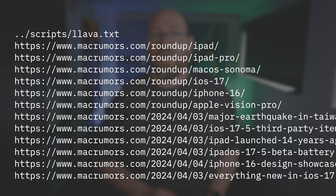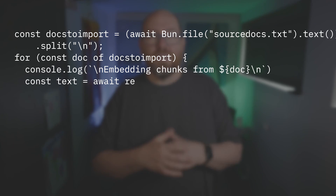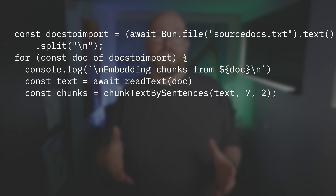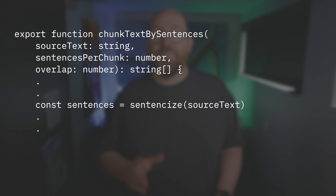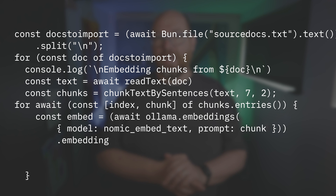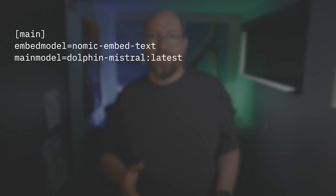I want to pull in articles from a website and be able to ask questions about those articles. I have a file called source-docs.txt that lists each URL or file on the file system that I want to embed — it's a list of articles from the MacRumors website. The output of my read-text function is just the text of the article. Next, I chunk up the text using my chunk-text-by-sentence function from the matzllm-tools npm module, which uses sentence-size to create chunks of a given number of sentences. Now for each chunk, I can embed. Embedding in Ollama is super easy — just ollama.embeddings, then specify the model name and the text. I have a config file that sets the embed model name and the main model name so I can easily switch between them.